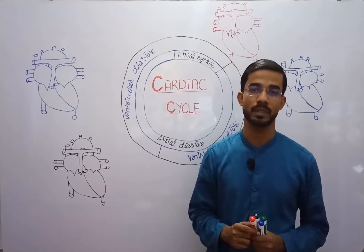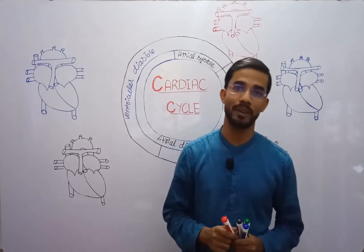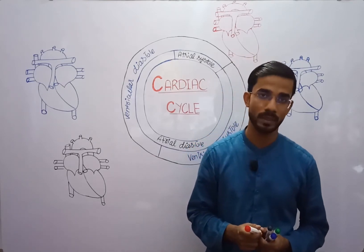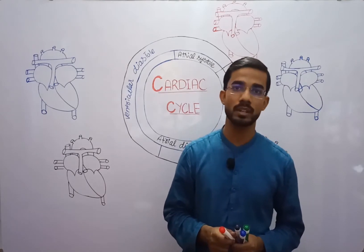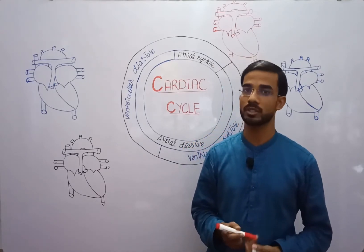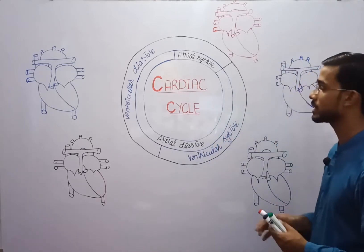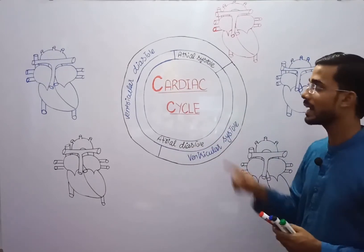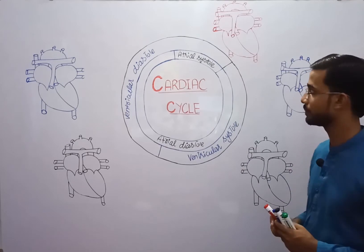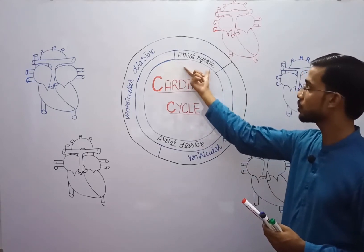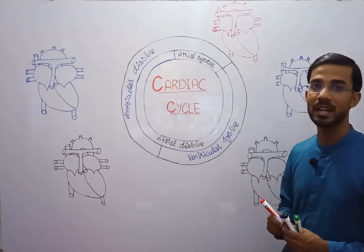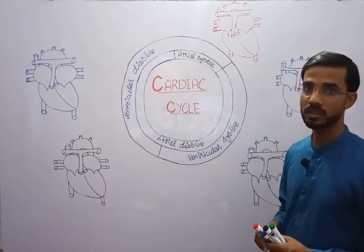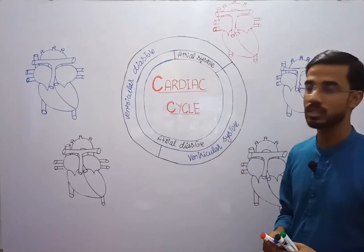There are two phases: one for the atria and one for the ventricle. There is one atrial systole, one atrial diastole, one ventricular systole, and one ventricular diastole. In this cardiac cycle diagram, the inner circle represents the atria and the outer circle represents the ventricle. This portion is for atrial systole, the larger portion is for atrial diastole, and the corresponding portions indicate ventricular diastole and ventricular systole.